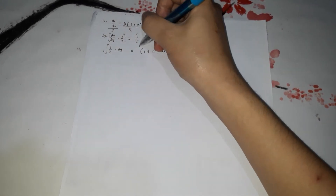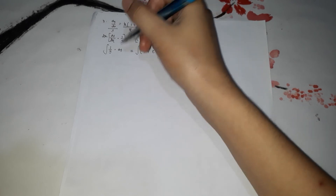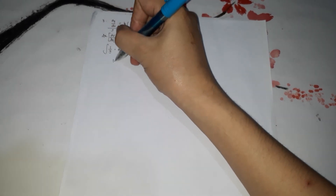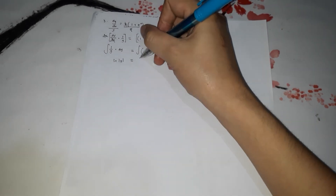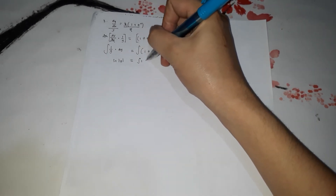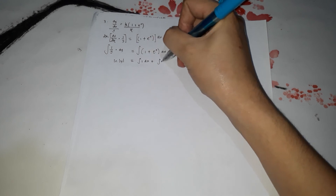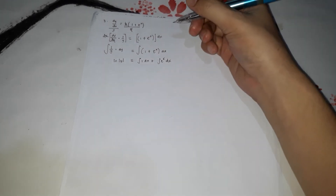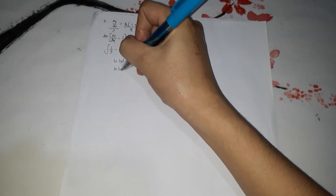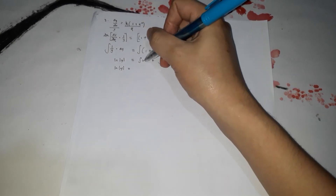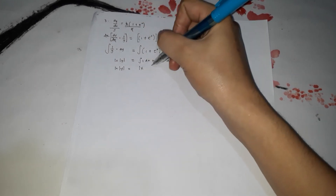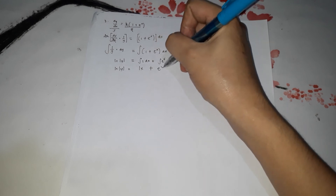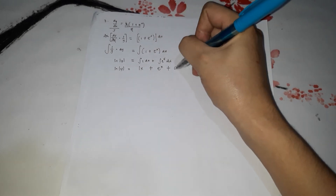Now we find the integral of both sides. The integral of 1/y dy is ln of absolute value of y. On the right side, we can distribute the integral: integral of 1 dx plus integral of e to the x dx. The integral of 1 is x, and the integral of e to the x is e to the x. So ln|y| equals x plus e to the x plus c.